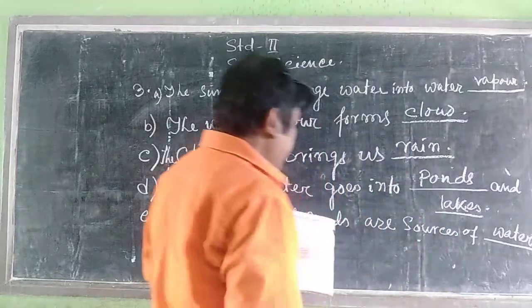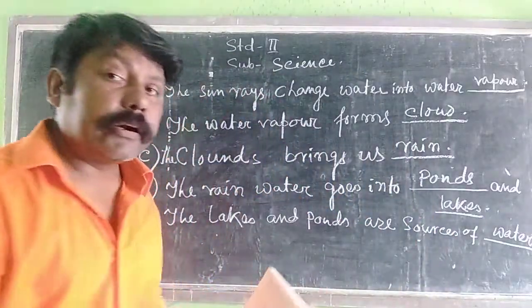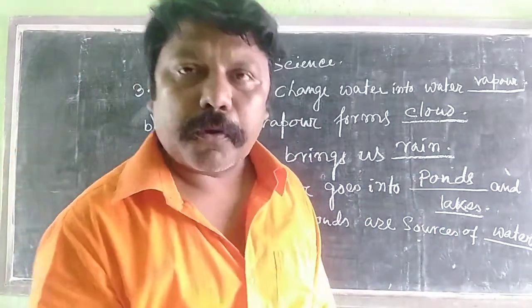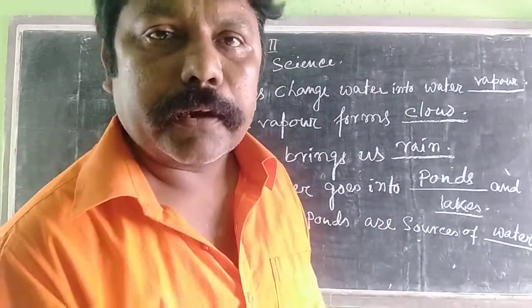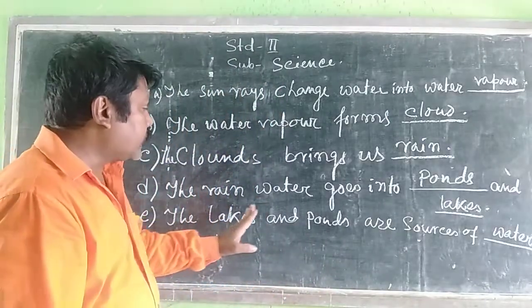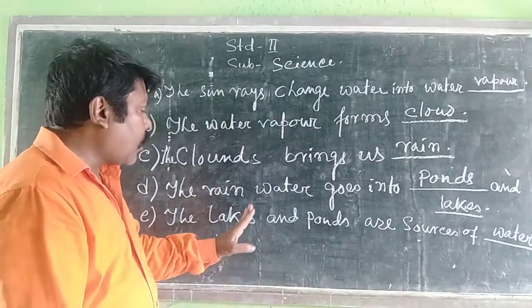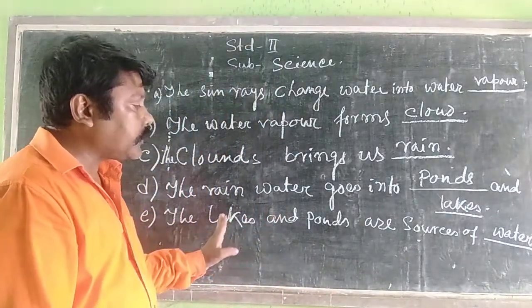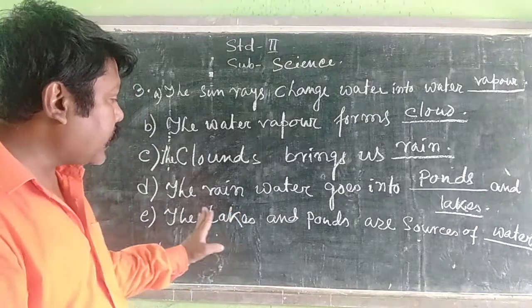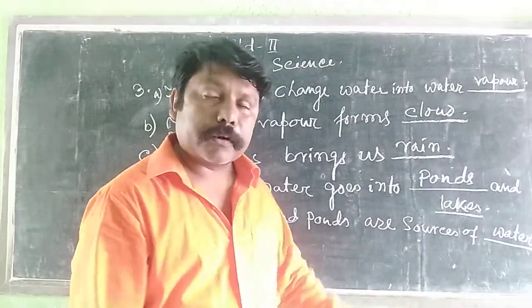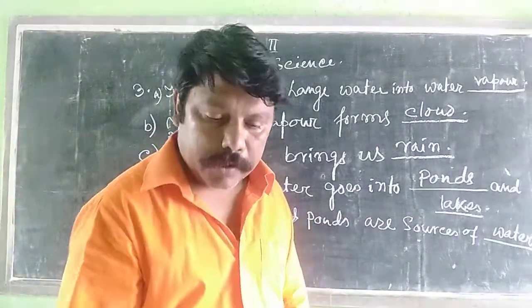Lakes and pools are a source of water. The main source of water is rain. We get water from lakes and pools. So we say that lakes and pools are a source of water.